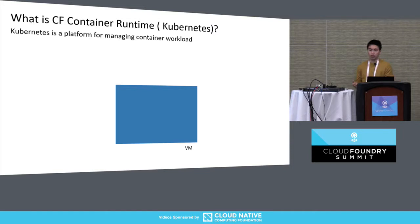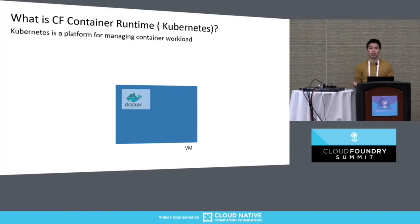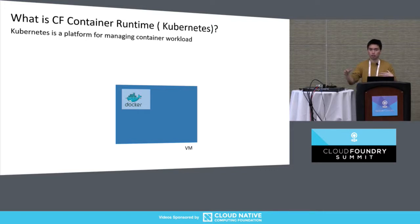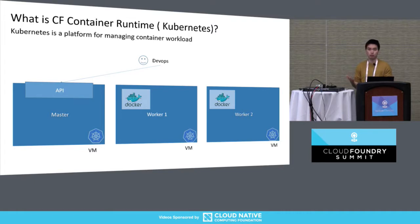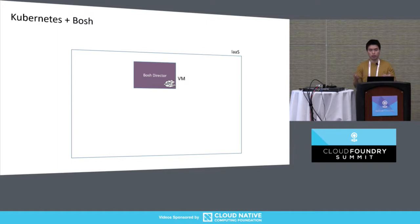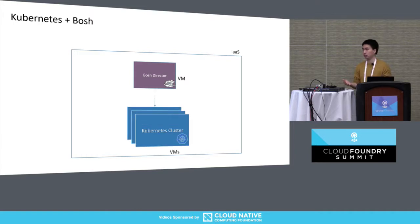So now let's talk about what CF Container Runtime or Kubernetes is. To me, it's just a platform for managing container workload. If I have one VM, I can run one or two containers myself. But if I have an entire data center and I want to spin up hundreds of containers, I need to distribute them across the data center — that's why I need Kubernetes. Kubernetes deploys workers on bare metal or on IaaS and exposes an API through the master. I just talk to this master to schedule my container workload. So BOSH will be the VM management for the Kubernetes cluster.